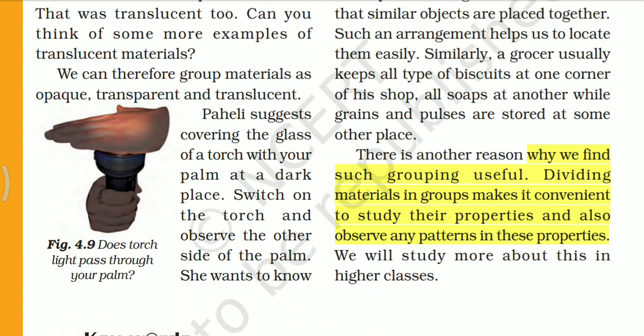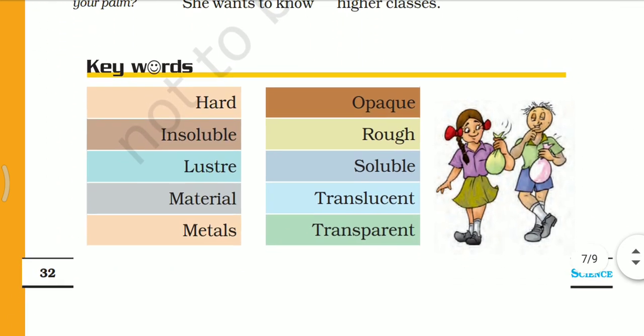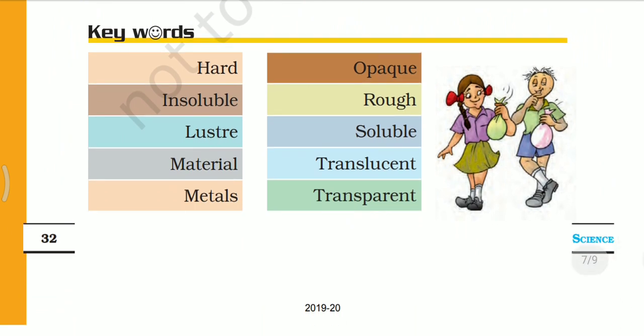We will study more about this in higher classes. Students, some keywords are given: hard, insoluble, lustre, materials, metals, opaque, rough, soluble, translucent, and transparent. All these keywords have been discussed in this chapter and their definitions are already written in the book.